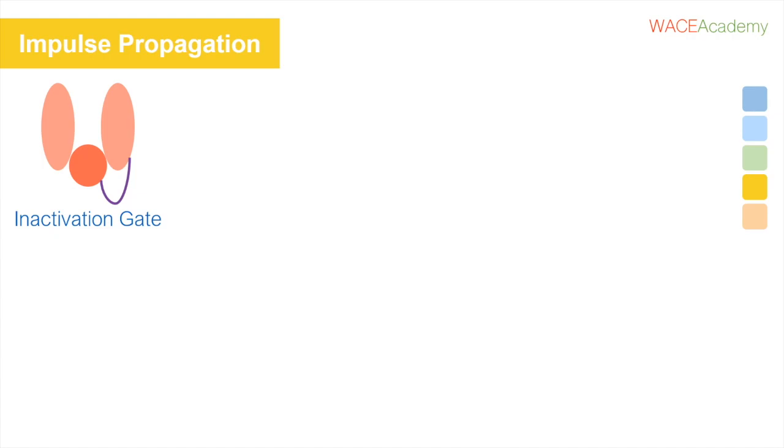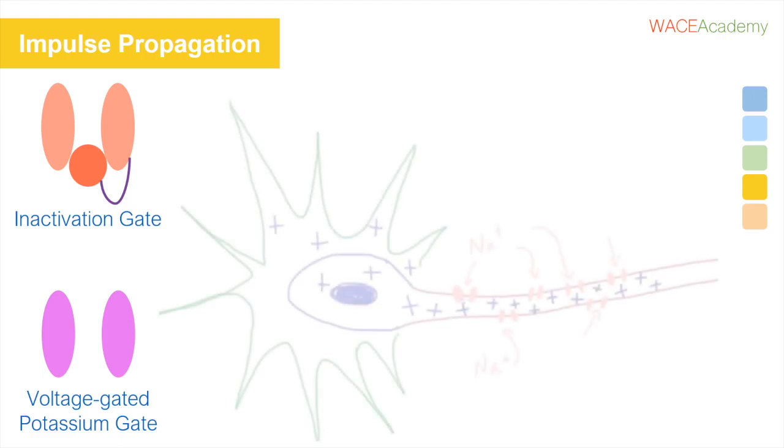There are other types of channels around the sodium channels as well. These ones are also voltage-gated, but instead of letting sodium in, they let potassium out.